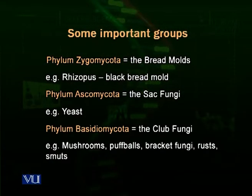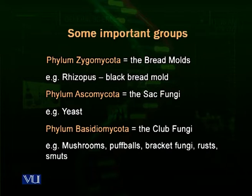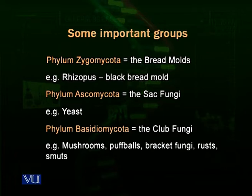Then comes the phylum Basidiomycota. These are called the club fungi, and a very important group included here is the mushrooms. Some mushrooms are edible — we can eat them — and they are a good source of proteins because their body consists largely of proteins. However, many mushrooms are highly poisonous; if someone eats them, they may instantly die. It is very difficult to identify whether a particular mushroom is poisonous or not, and only experts can do so. Edible fungi are cultured for food and are a very costly part of the diet, used in salads and various dishes.